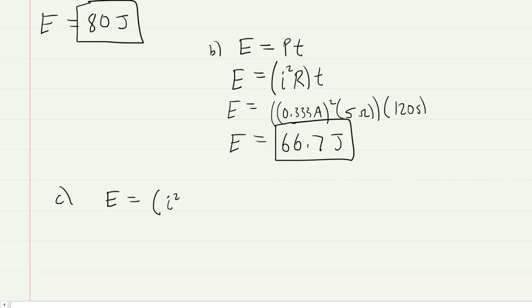So one more time we take the current of 0.333 amps, we square it, we multiply it by the internal resistance of the battery, which was 1 ohm, and we multiply it by the 120 seconds. And when we work this out, we're going to get 13.33, or just 13.3 joules. So this would be the correct answer to Part C.